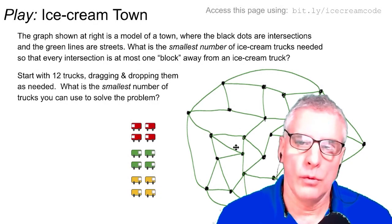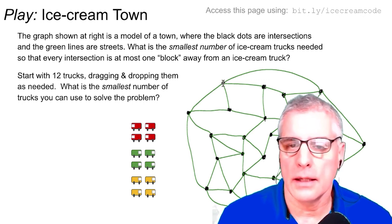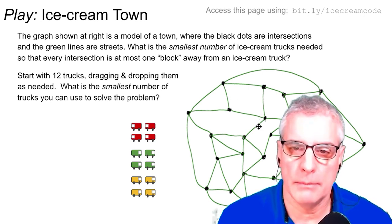So we're going to take a side trip to Ice Cream Town. So here's Ice Cream Town. So when you look at this drawing right here, the dots, the black dots, represent intersections like a map of the town. And the green lines represent the streets connecting the intersections. So it's a graph, but we're pretending it's a map of a town.